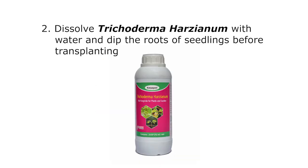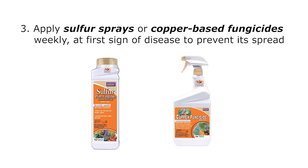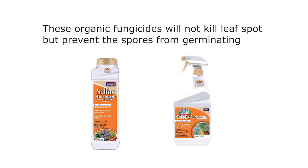Dissolve Trichoderma harzianum with water and dip the roots of seedlings before transplanting. Apply sulphur sprays or copper-based fungicides weekly at the first sign of disease to prevent its spread. These organic fungicides will not kill leaf spot but prevent the spores from germinating.